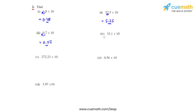Coming to the fourth bit, we have 33.1 divided by 10. The decimal must move one place towards the right and will be between the two 3s, giving the answer 3.31 for the fourth bit.